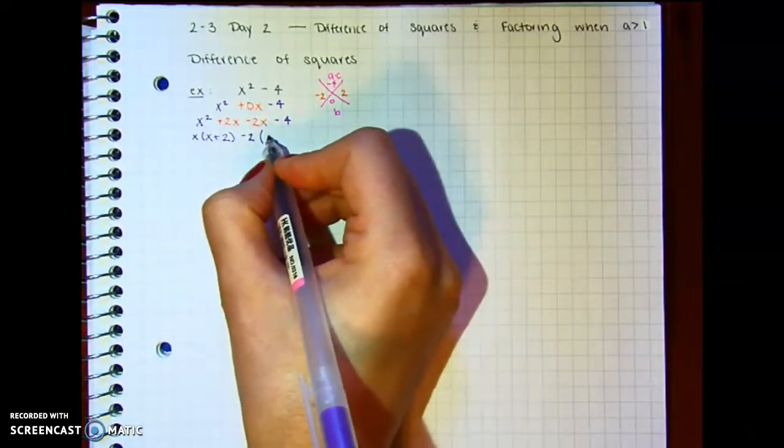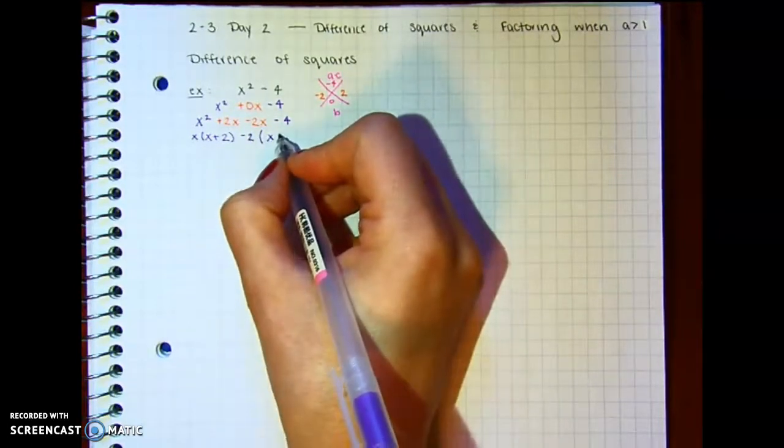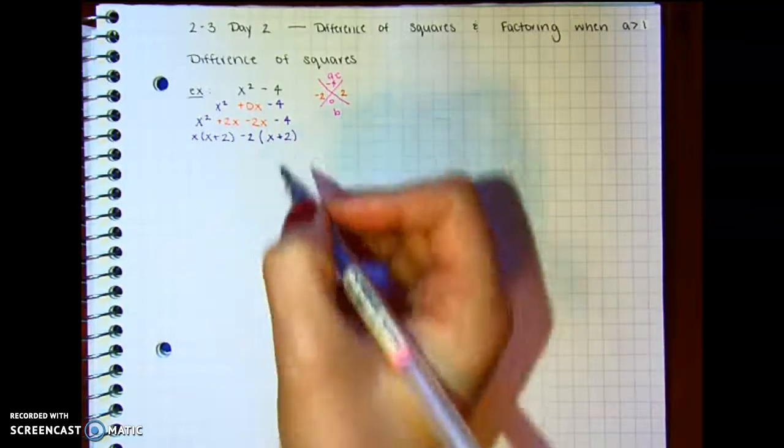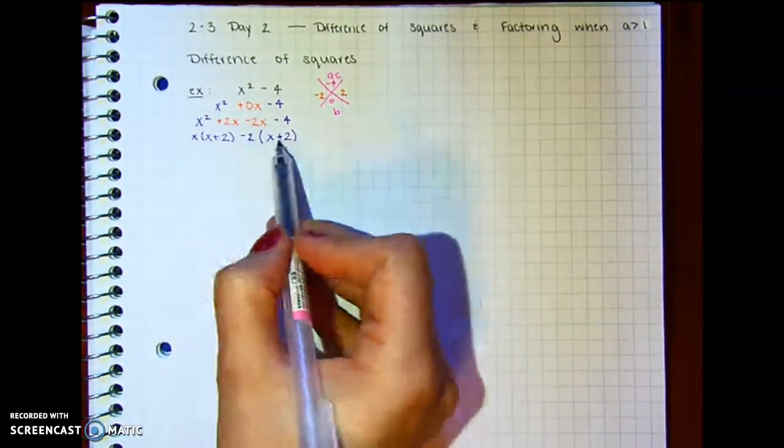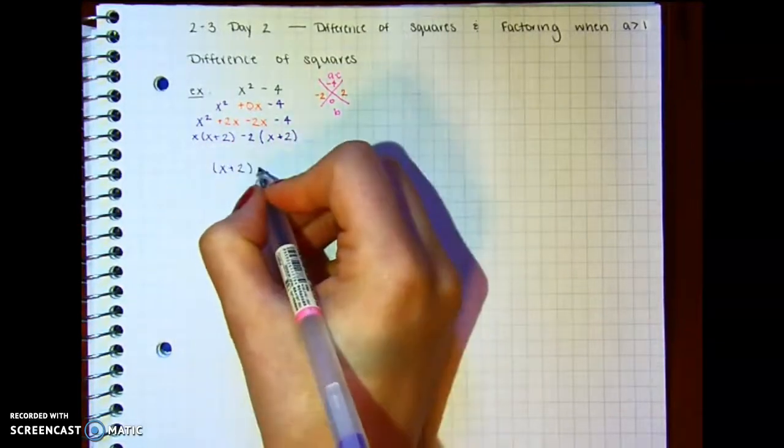Negative 2x divided by negative 2 is x. Negative 4 divided by negative 2 is positive 2. And then we factor out the greatest common factors, so they both have an x plus 2 in common and an x minus 2.